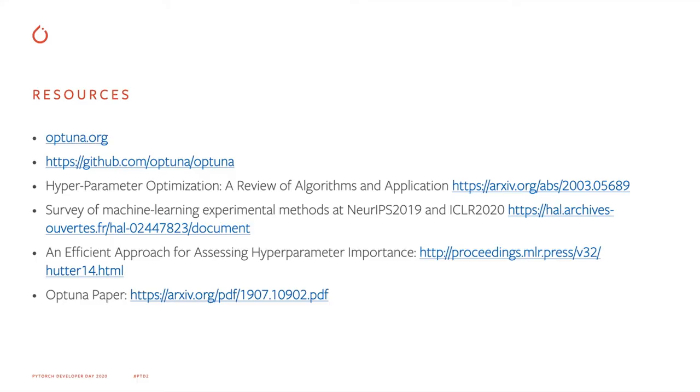These are some of the resources that you can look at for more information. There's optuna.org, which is the home page for Optuna, our GitHub at optuna/optuna. Also, there is an ecosystem presentation on using Optuna with PyTorch, which you can find by googling. And then also we have the papers which I've referred to in this discussion.